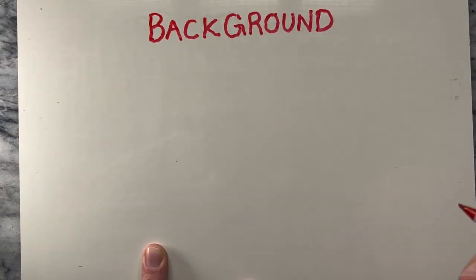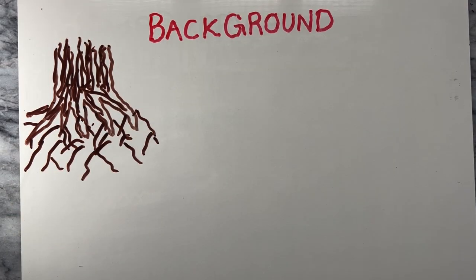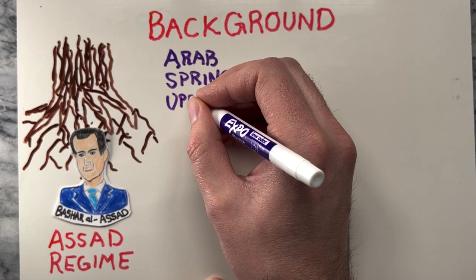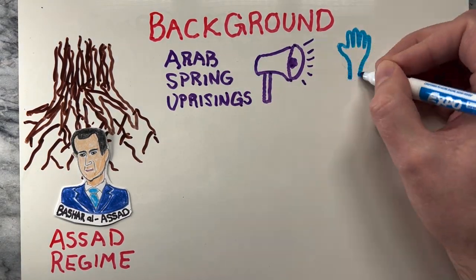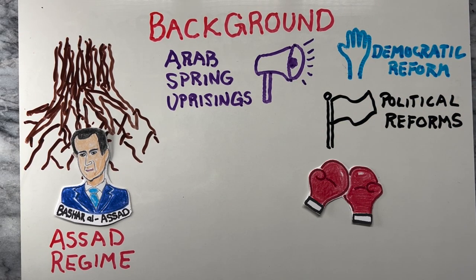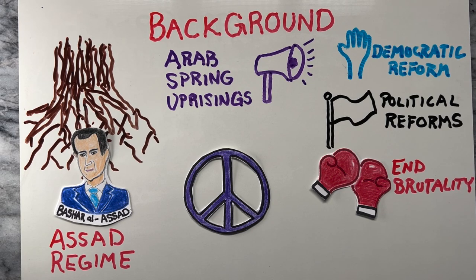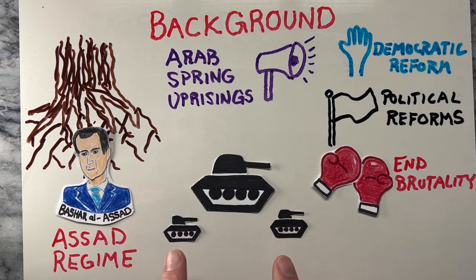The roots of the conflict lie in the long-standing grievances of the Syrian people against what some label as the repressive and corrupt rule of the Assad regime. The Arab Spring uprisings of 2011 provided an opportunity for Syrians to voice their demands for democratic reforms, greater political freedom, and an end to the regime's brutality. The initial protests were peaceful, but the regime responded with brutal force, leading to an escalation of violence and the eventual outbreak of civil war.